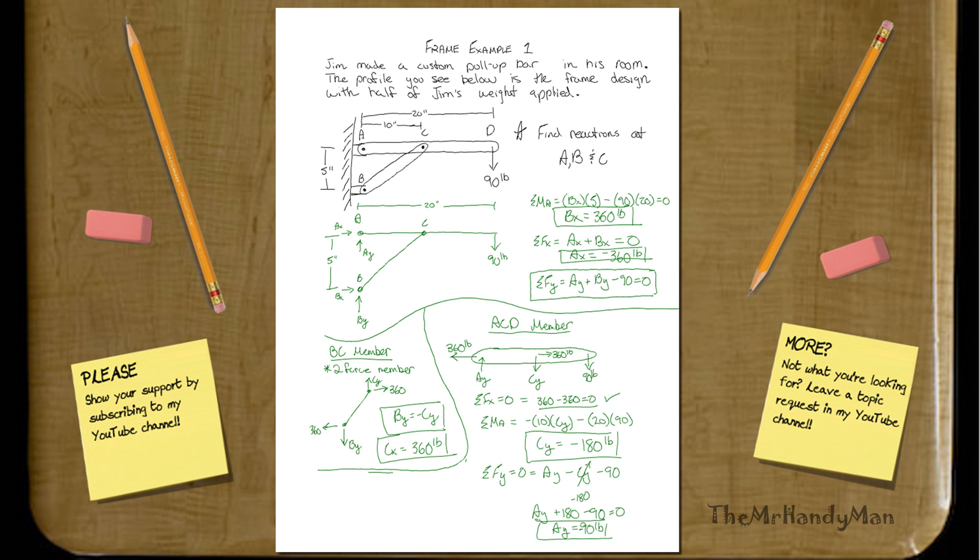And we knew what A_X and C_X and all these are. Let's just figure out what the final values are real quick. Basically, through Pythagorean theorem, you're going to have 360 squared plus 90 squared, which will equal 371 pounds.